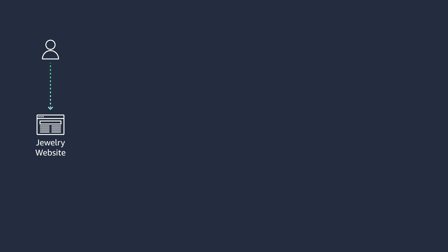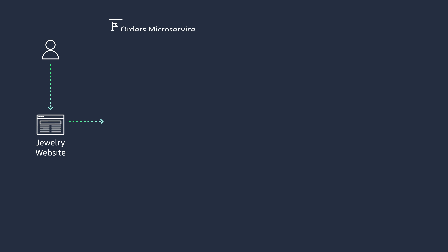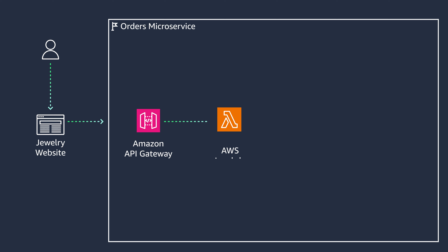When a customer makes an online purchase, one of the services that your website interacts with is the orders microservice. You've exposed your orders microservice using Amazon API Gateway and AWS Lambda, which performs additional business logic like ensuring the item is still available.